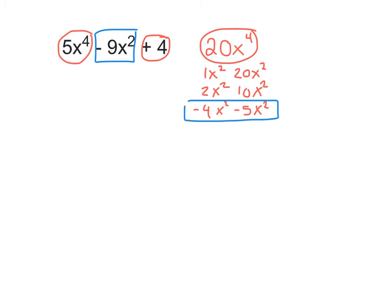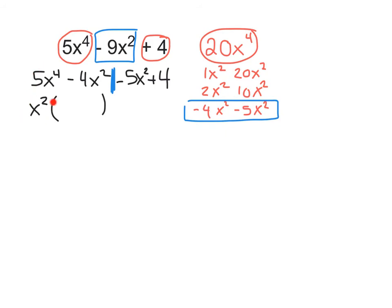So back to our magic number work. We put 5x to the 4th and 4 on the ends, and put our factors in the middle: minus 4x squared minus 5x squared. Now we use a vertical line to divide the two sides and factor out the GCF. On the left-hand side, we factor out x squared. From 5x to the 4th, factoring out x squared leaves 5x squared. And from minus 4x squared, factoring out x squared leaves minus 4.